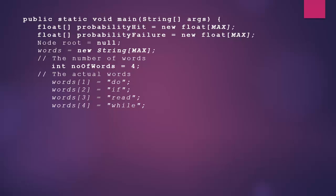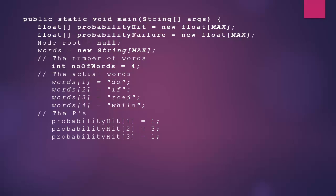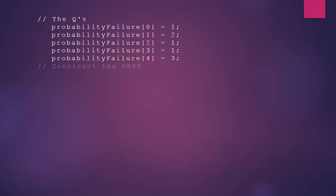We're dealing with strings rather than integer data. The array starts from index one rather than zero to keep things simple. So: words[1] = "do", words[2] = "if", words[3] = "read", words[4] = "while". The probability hits are: probability_hit[1] for 'do' is 1, probability_hit[2] for 'if' is 3, probability_hit[3] for 'read' is 1, and probability_hit[4] for 'while' is 3.